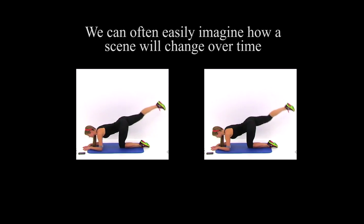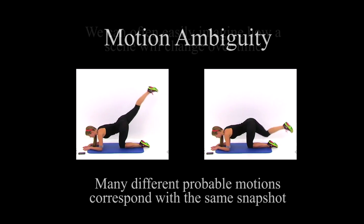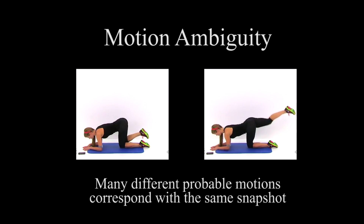Humans are often very good at imagining how a scene will change over time, even from just a single snapshot. For instance, look at these images. Based on the position of the girl, many would guess that she is moving her leg as she exercises. However, can you tell if her leg is moving up or down? This is a much harder question to answer, as there is often an intrinsic ambiguity to the direction of the motion.